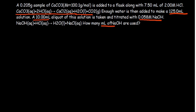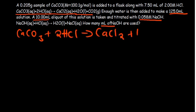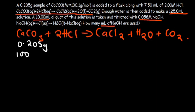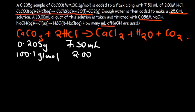We've been told calcium carbonate reacts with hydrochloric acid in the first equation. The calcium carbonate sample was 0.205 grams with molar mass 100.1 grams per mole. The hydrochloric acid was 7.5 milliliters at 2.0 molar concentration. We need to determine the number of moles for both calcium carbonate and hydrochloric acid present in the first reaction.